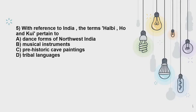Moving to Question 5: With reference to India, the terms Halbi, Ho, and Kew pertain to — the correct option is tribal languages. Halbi is an Eastern Indo-Aryan language, transitional between Uriya and Marathi. Ho is a Munda language of the Austro-Asiatic language family, spoken primarily in India by about 1.04 million people as per the 2001 census. Kew is a southeastern Dravidian language spoken by the Kandhas, mostly spoken in Odisha and written in Odiya script.